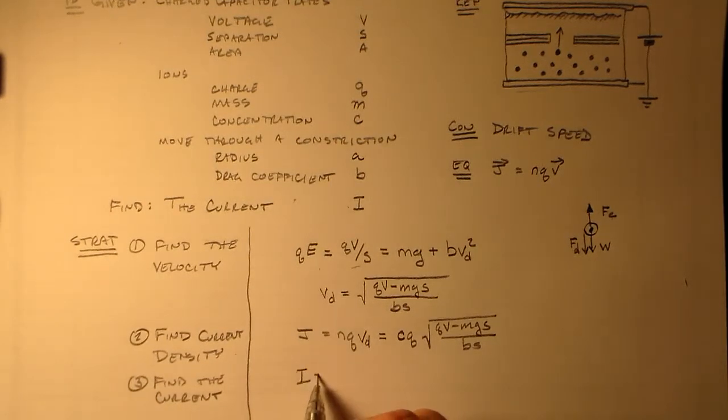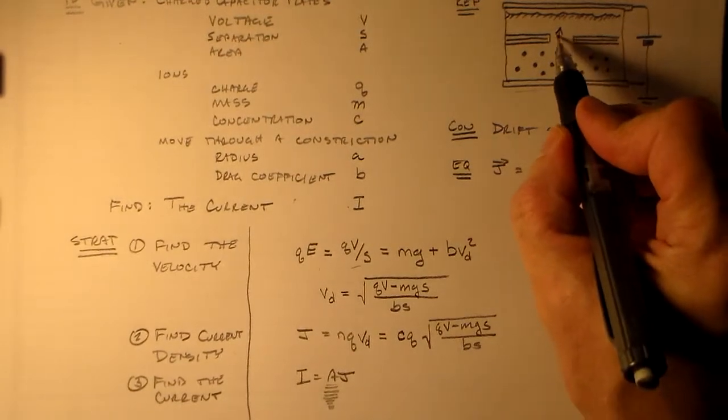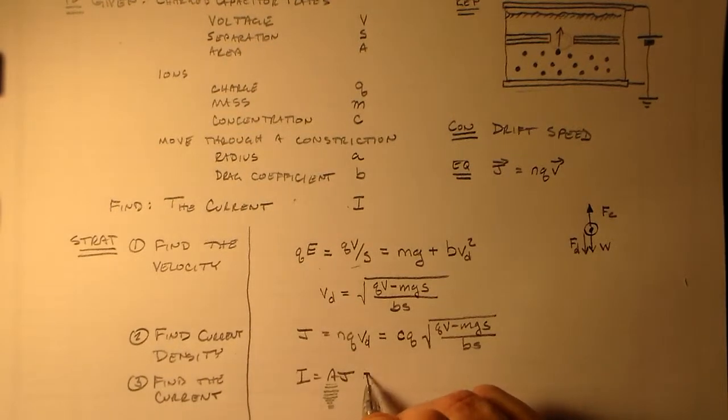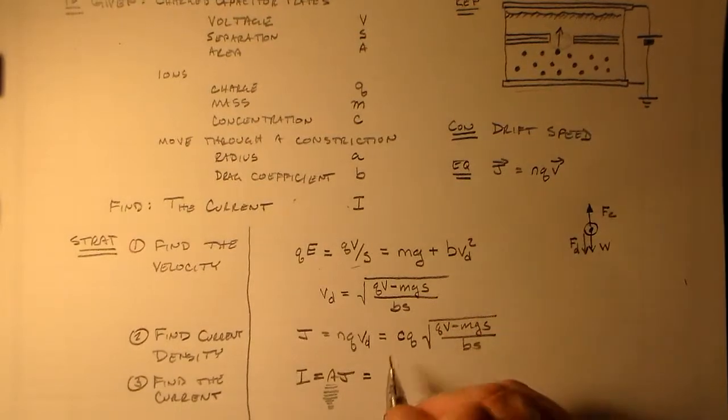What we need is the current, which is just A times J. This area here, that area is the area of this constriction. So, let's just say that's the area of this constriction.